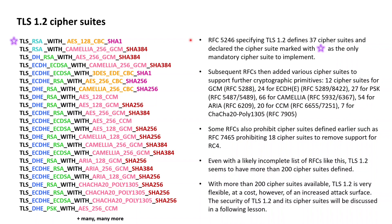They used Triple-DES or AES as a block cipher behind the CBC block cipher mode of operation for the encryption of application data, and either used MD5, SHA-1, or SHA-2 with 256-bit hash values for HMAC and the pseudorandom function PRF.